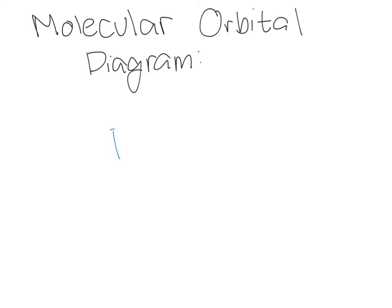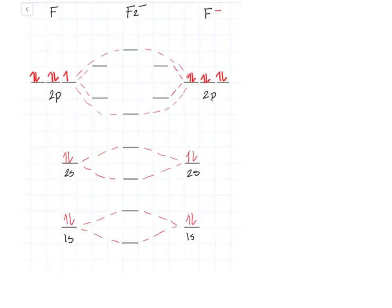We're going to use the molecular orbital diagram for F2 minus and F2 plus because these species cannot be explained by valence bond theory and also they don't exist. Here's the molecular diagram for F2 minus.